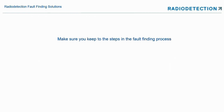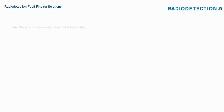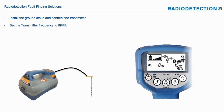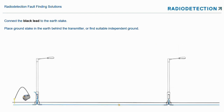To be successful in fault finding, you've got to make sure you stick to the steps. Number one: install the stake in the ground and connect the transmitter — we recommend about two meters away from whatever you're connecting to. Set the transmitter frequency to 8 kHz fault find. Connect the black lead to the earth stick and put the ground stick in the earth behind the transmitter, about two meters away.